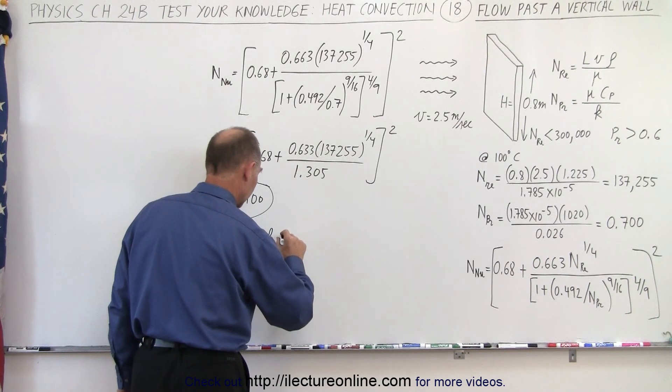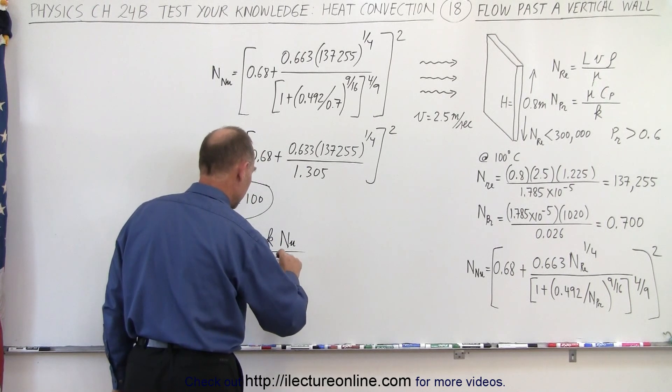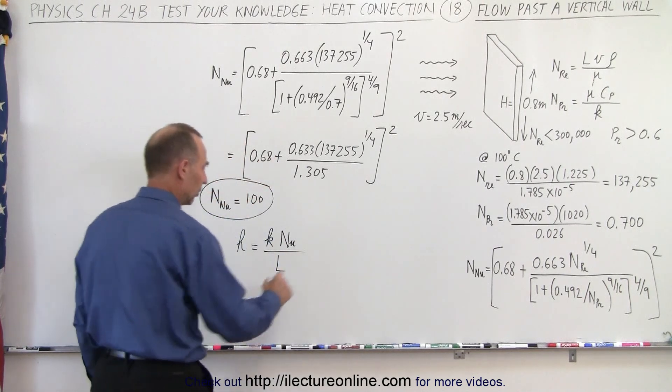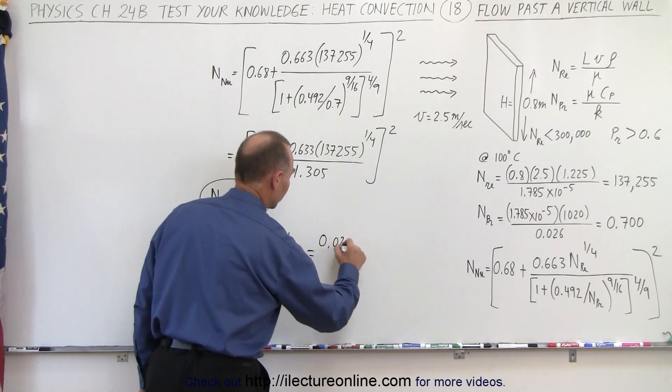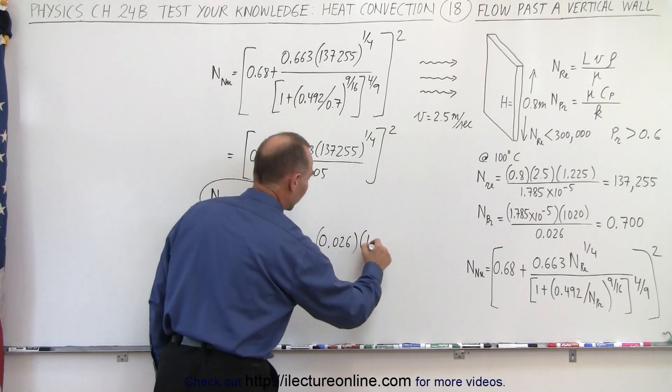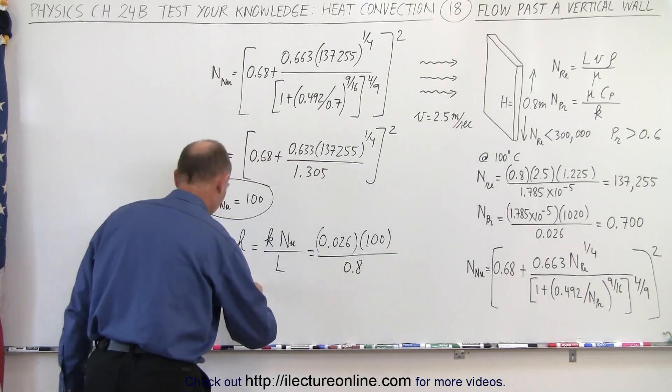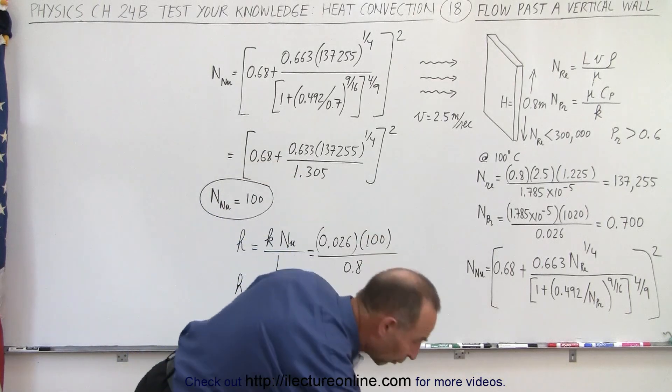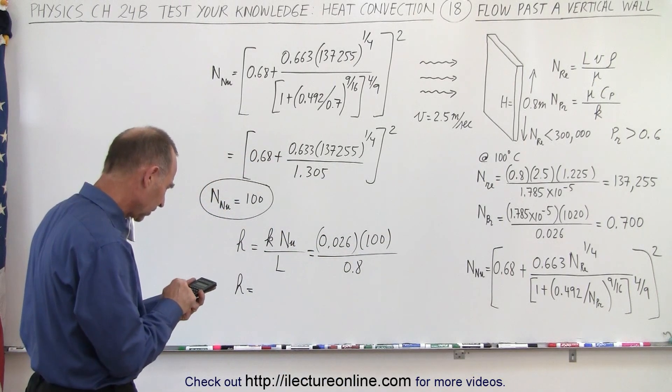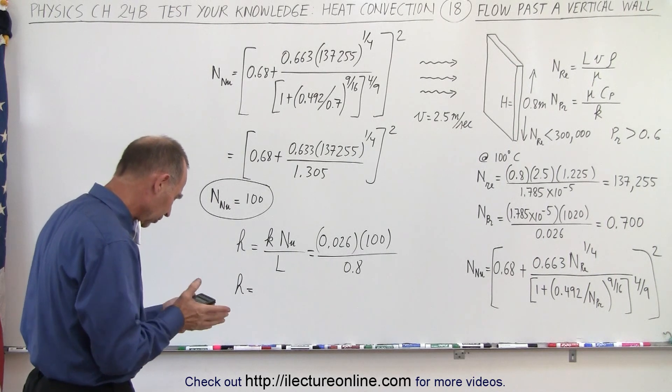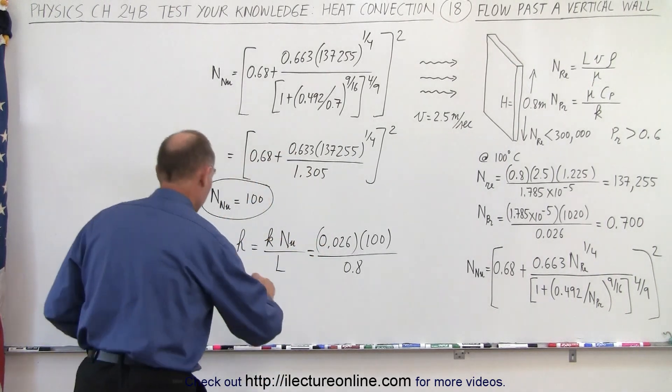Plug in the numbers: k for air would be 0.026, the Nusselt number is 100, and the characteristic length is 0.8. So that gives us a transmission coefficient of 0.026 divided by 0.8, which in this case would be about 3.26 watts per square meter per kelvin. Seems a little low for that speed, but that's the number we get out of that particular equation.